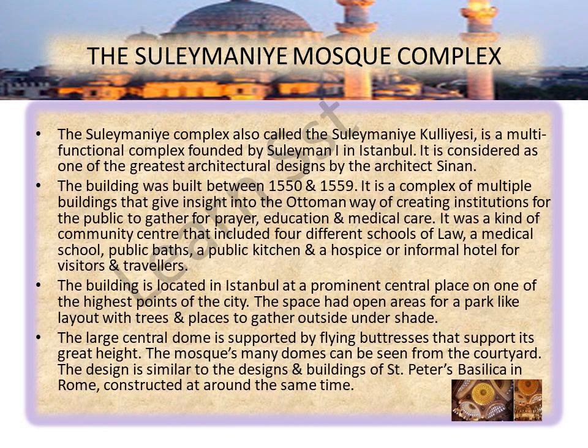The Sulaymaniyah Mosque complex, also called Sulaymaniyah Kullisi, is a multifunctional complex founded by Suleiman I in Istanbul. It is considered one of the greatest architectural designs by the architect Sinan, built between 1550 and 1559. It is a complex of multiple buildings giving a clear picture of the Ottoman way of creating institutions for the public to gather for prayer, education, and medical care — a kind of community center that included four different schools of law, a medical school, public baths, a public kitchen, and a hospice or informal hotel for visitors and travelers.